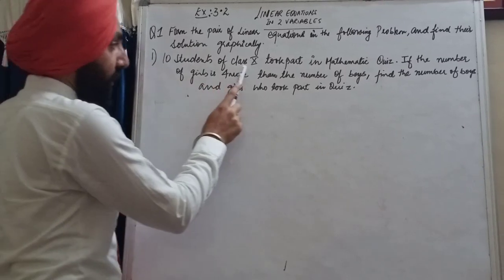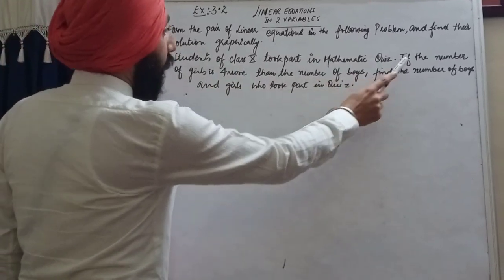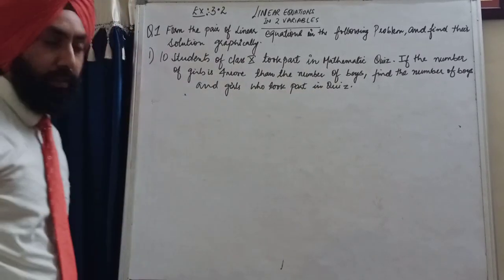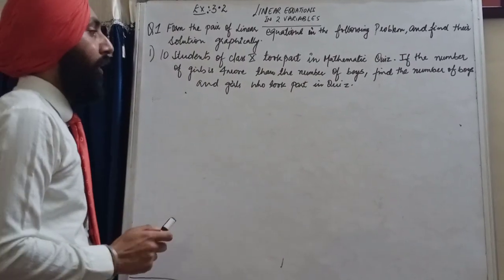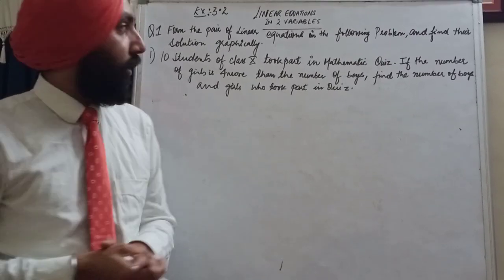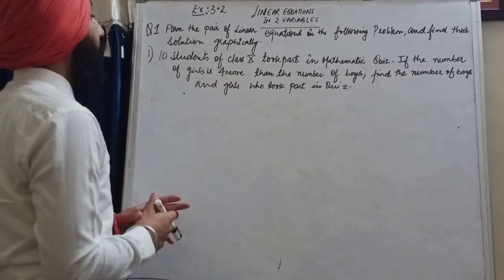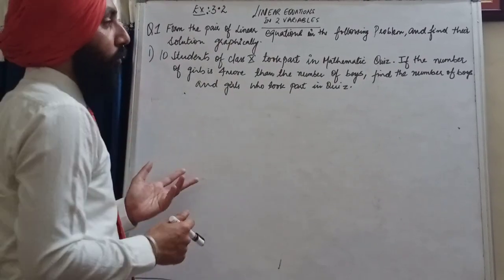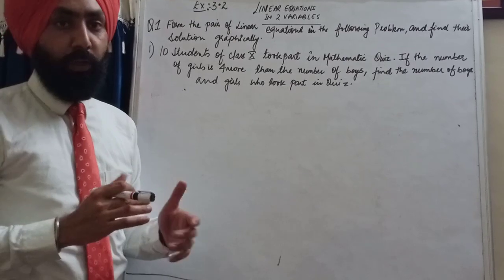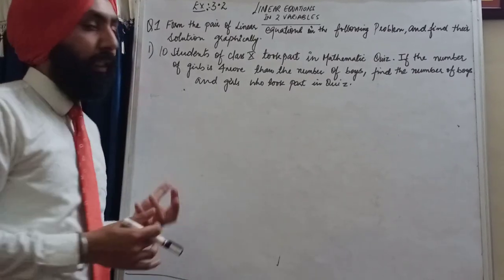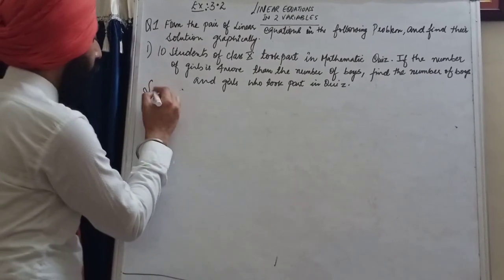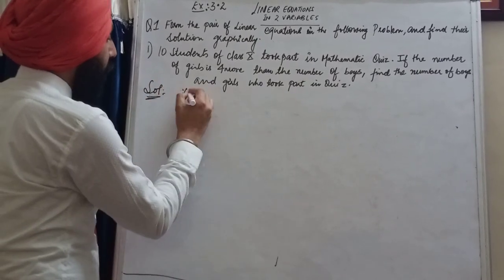We read the statement: 10 students of class 10 took part in a Mathematics quiz. If the number of girls is four more than the number of boys, find the number of boys and girls who took part in the quiz. So basically there are 10 students participating in the quiz competition, and the number of girls is four more than the number of boys. This gives us an indication that we have to take variables for the number of boys and number of girls.